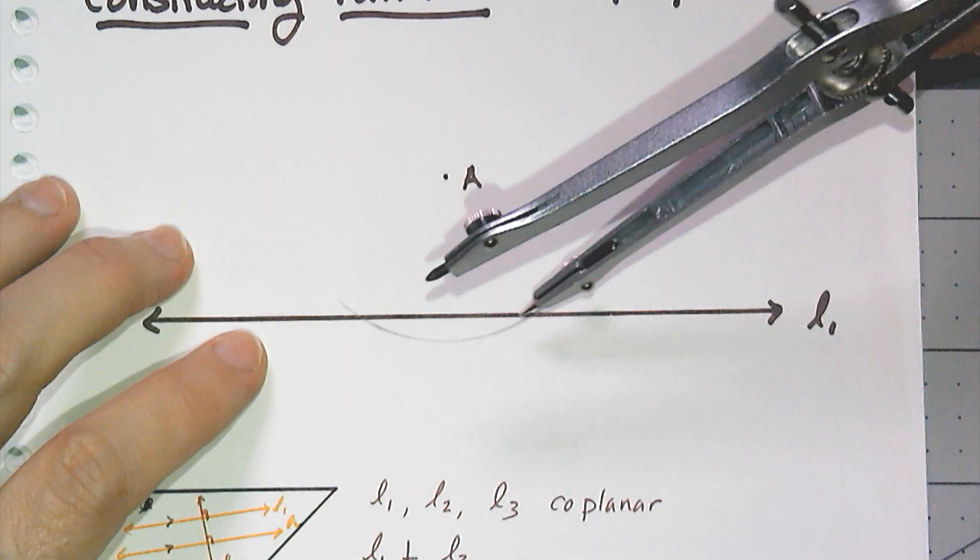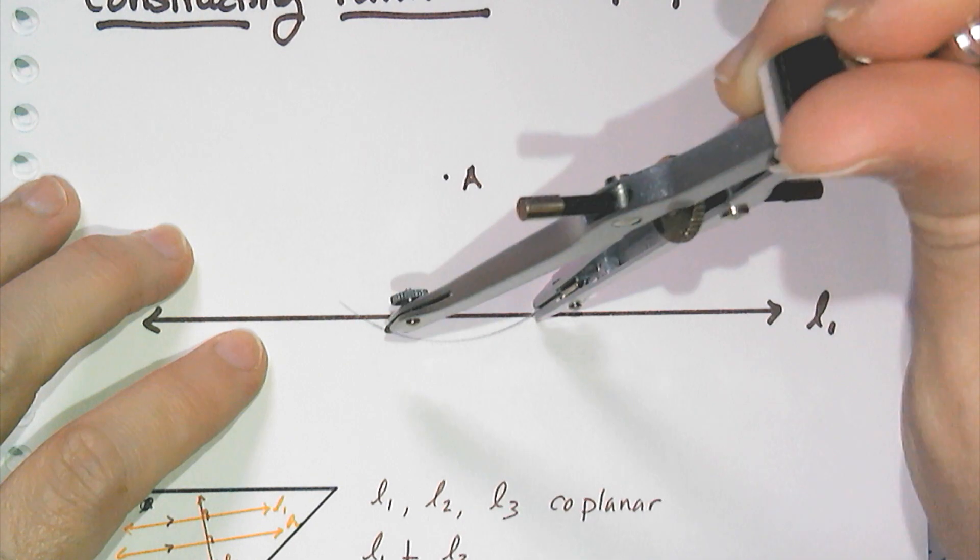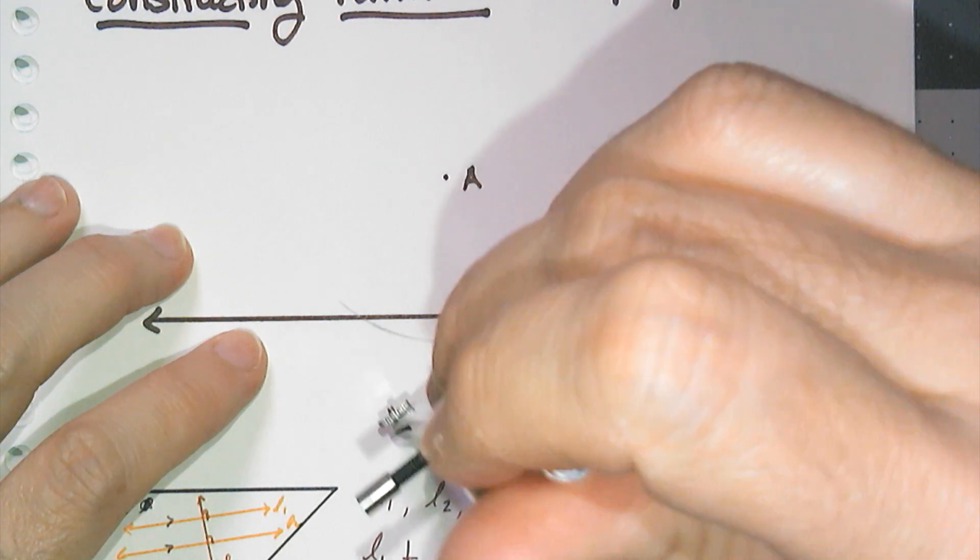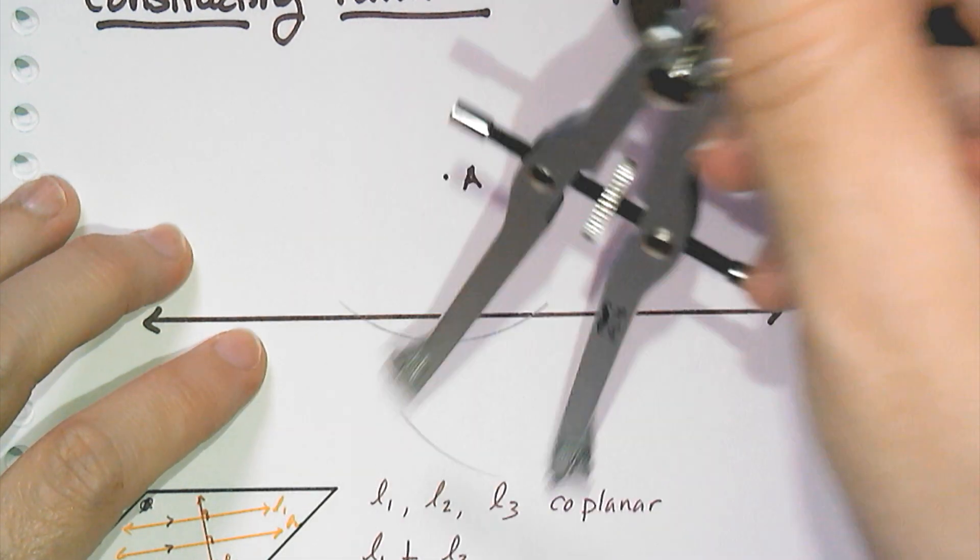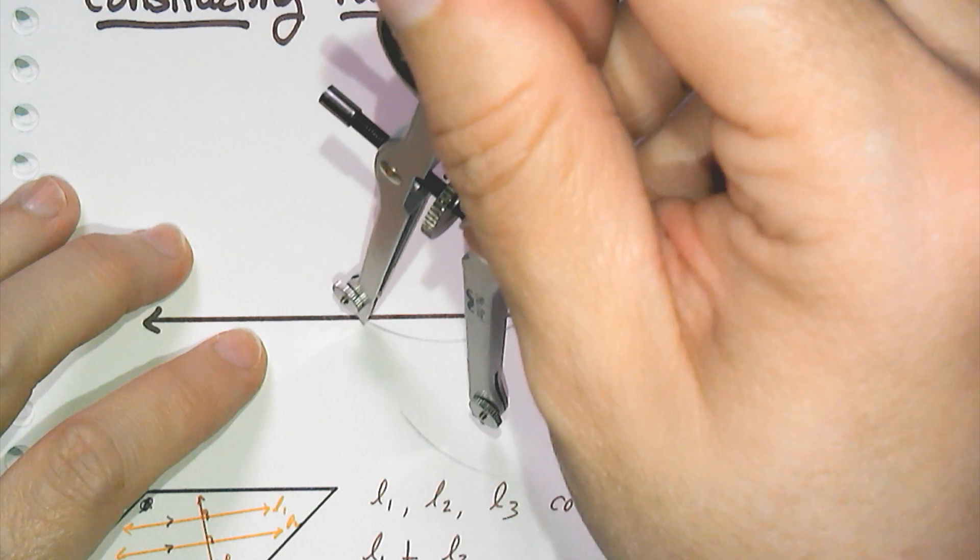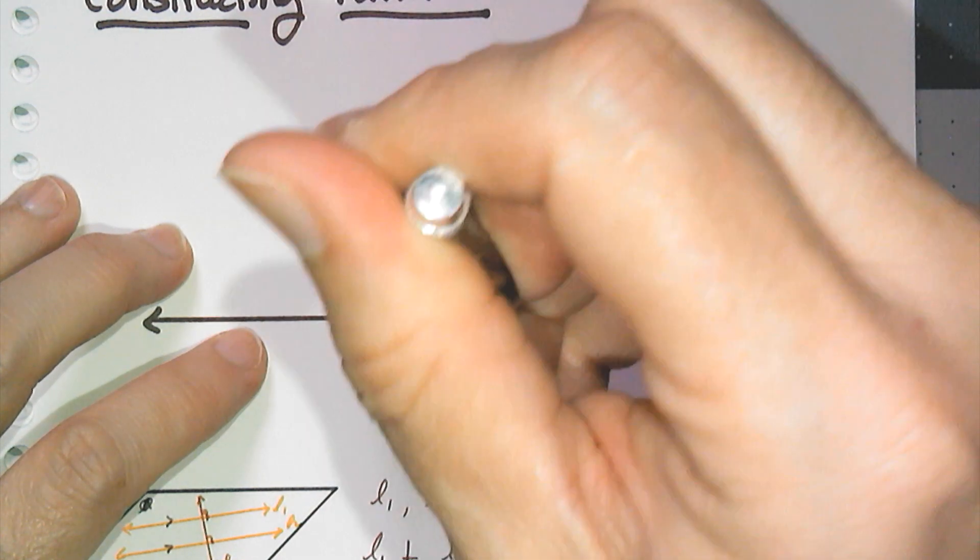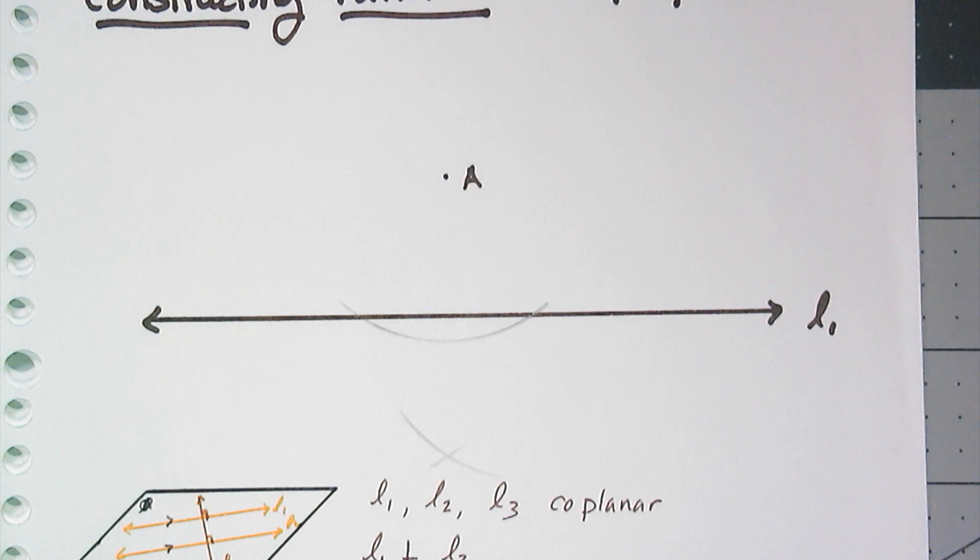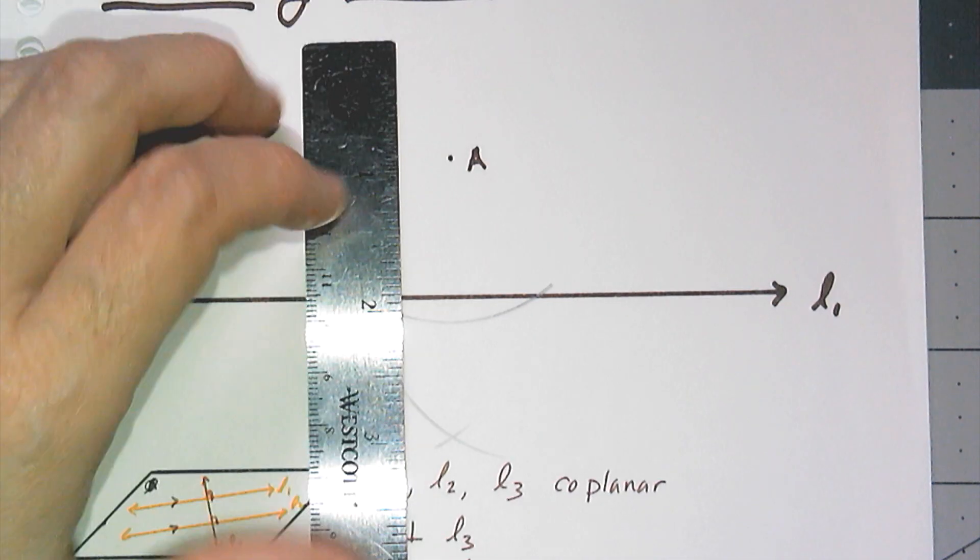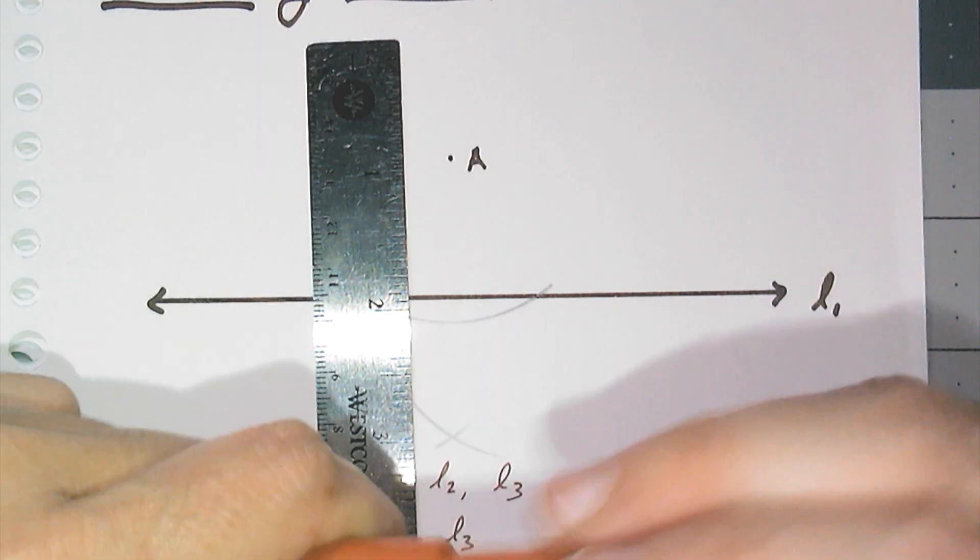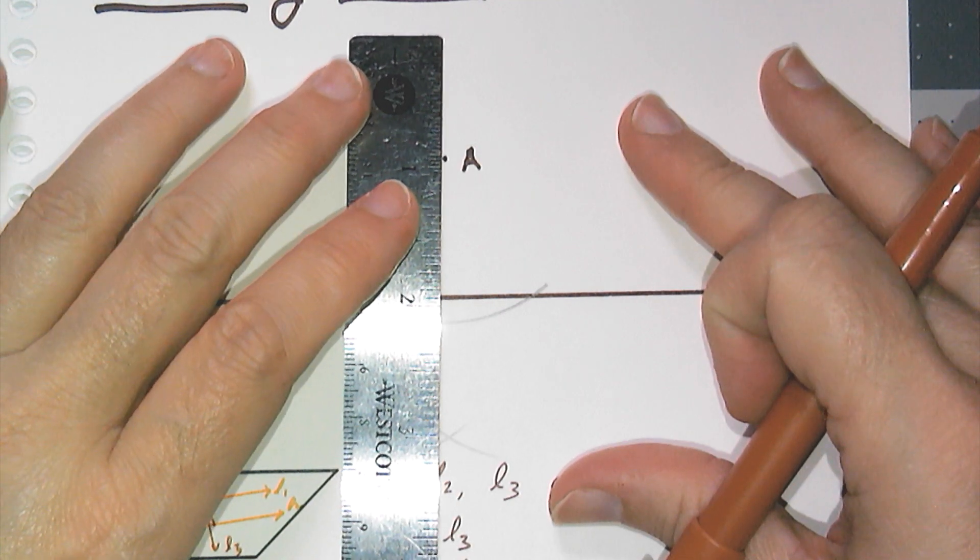And then I'm going to use the intersection of that arc and the line to swing two arcs below point A, and where they intersect is going to be the point that I need for my construction. Because remember, I need two points for a line. And so when I connect A with this point down here,